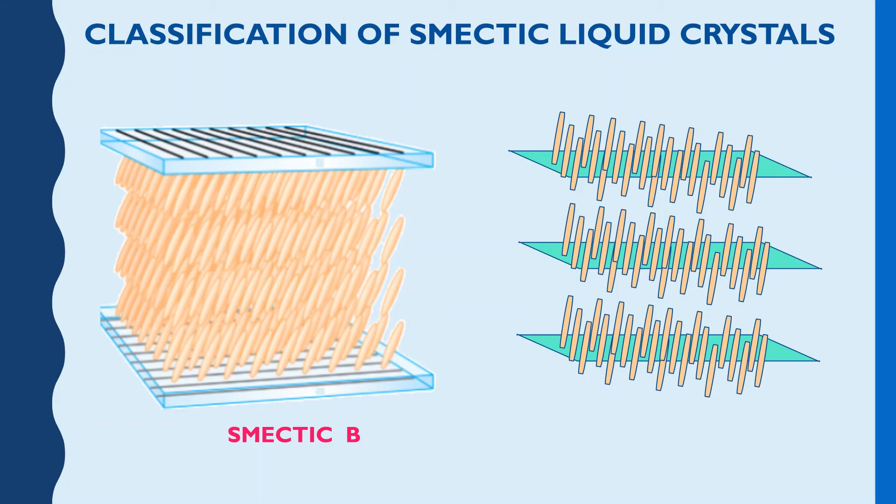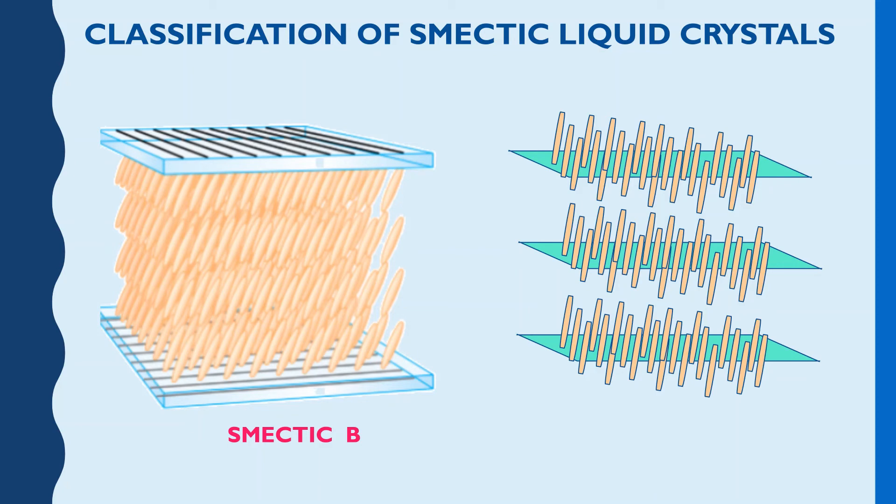The third categorization, which is actually out of these three, out of all the major categorization of smectic liquid crystal is the smectic C liquid crystal. Now, this is a very interesting phase actually. Why? Because here, what happens? Yes, of course, again, the molecules are arranged in different layers. But here, what do they do? They form a group of six.